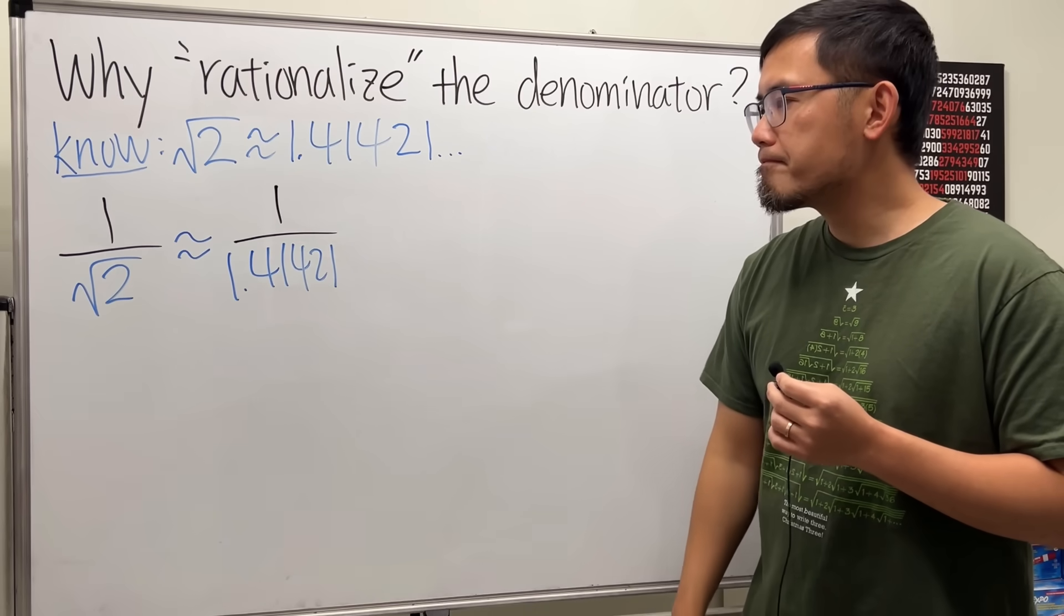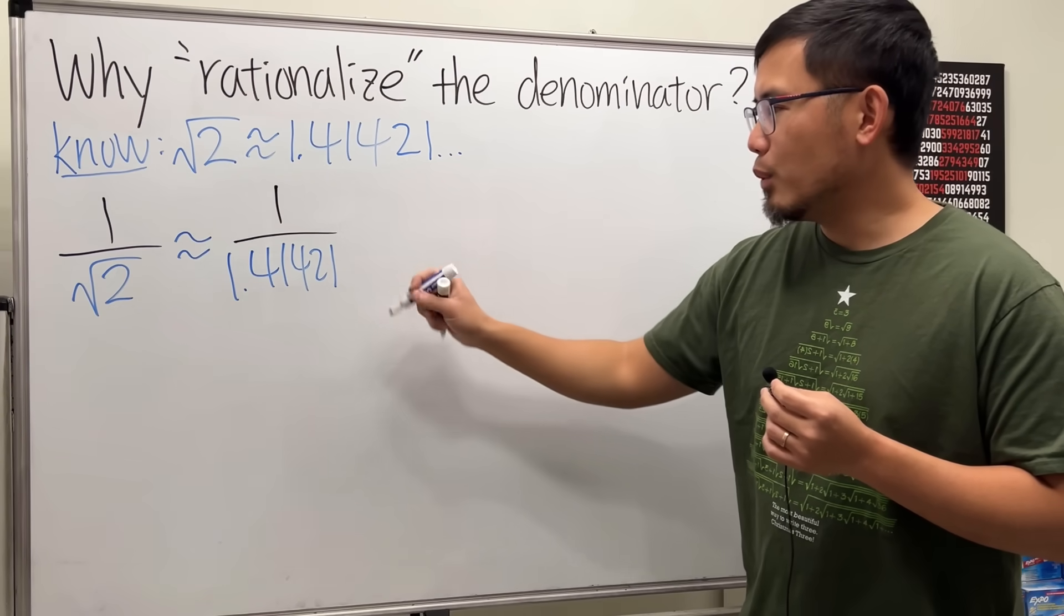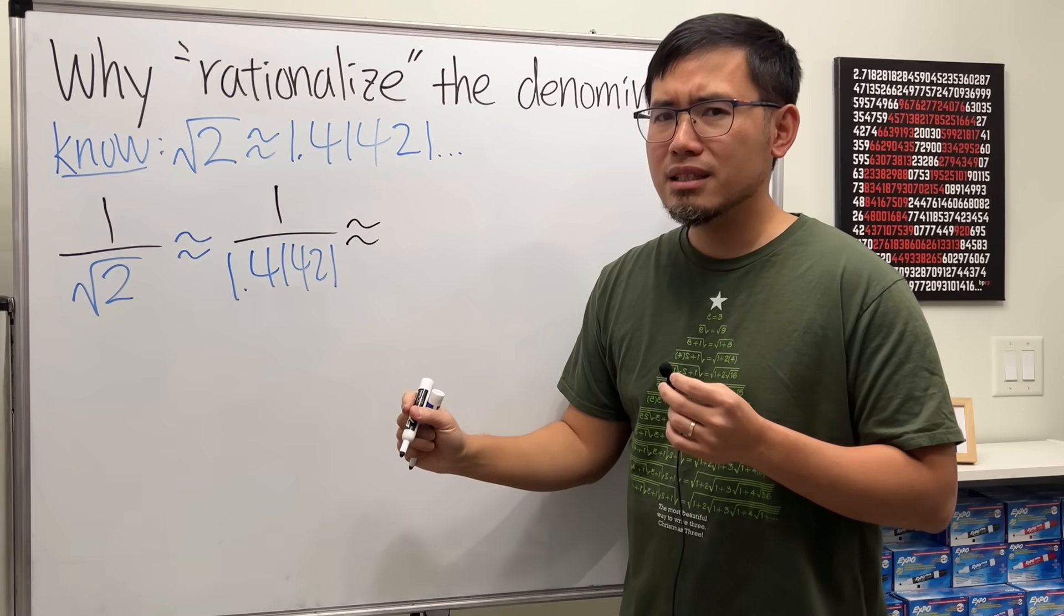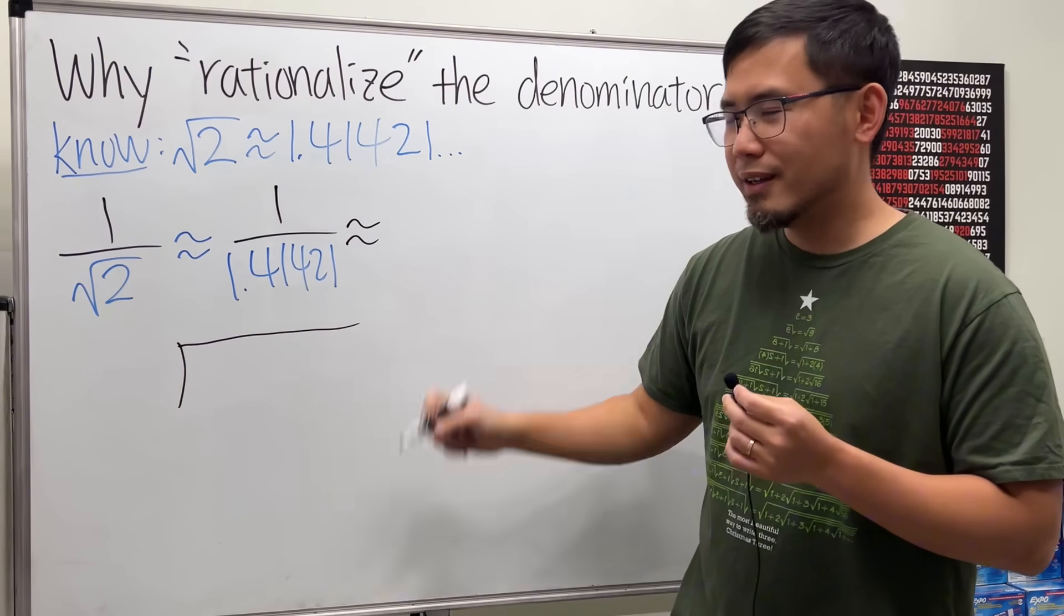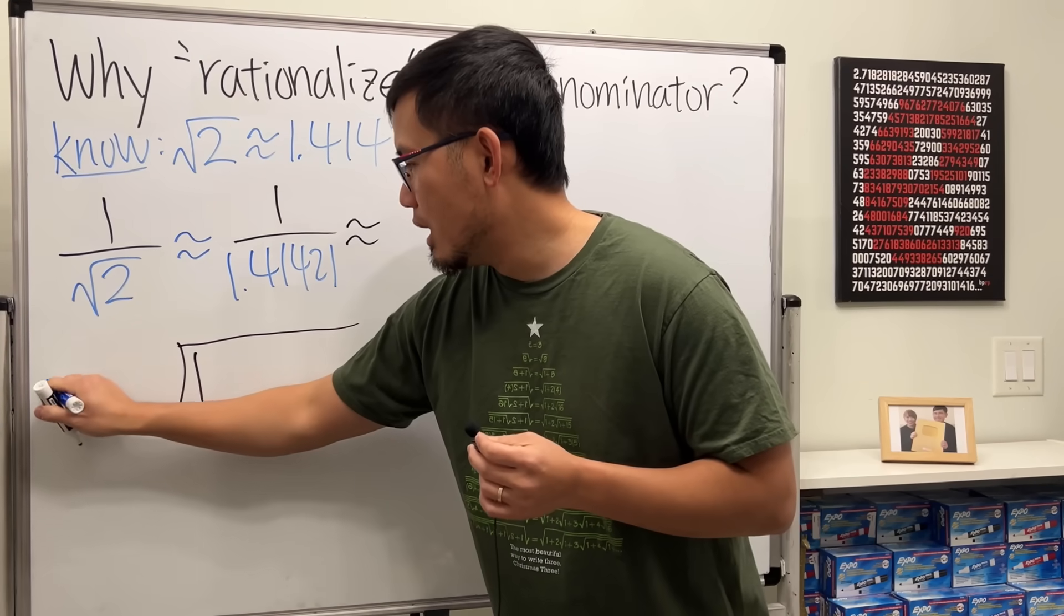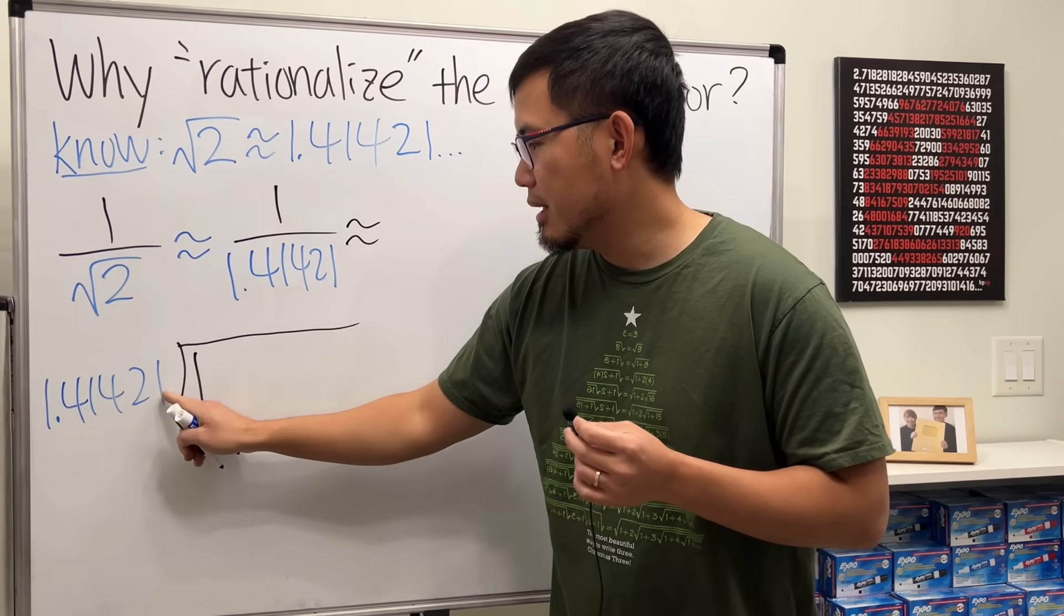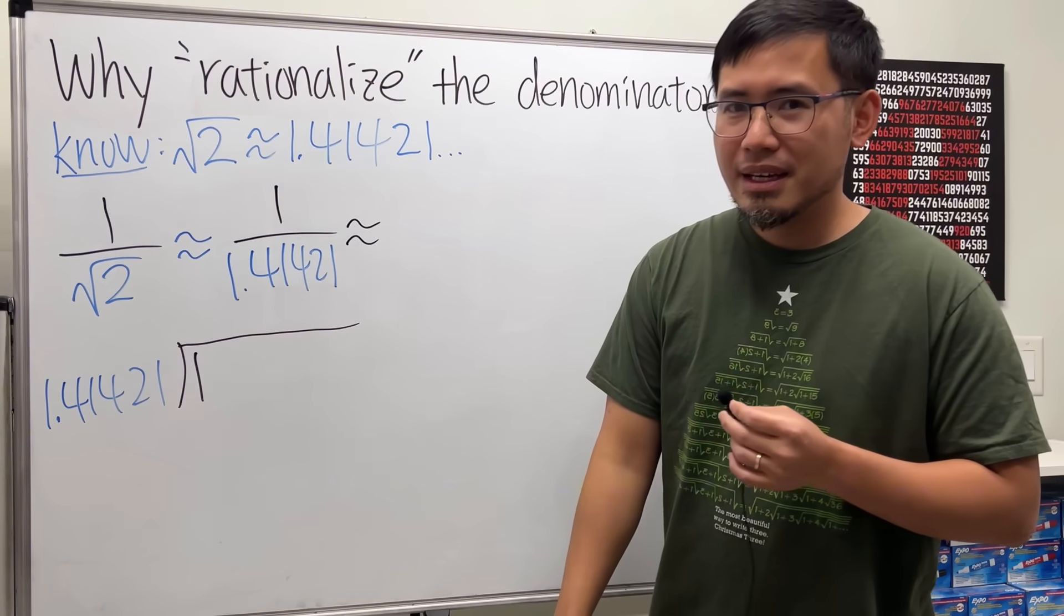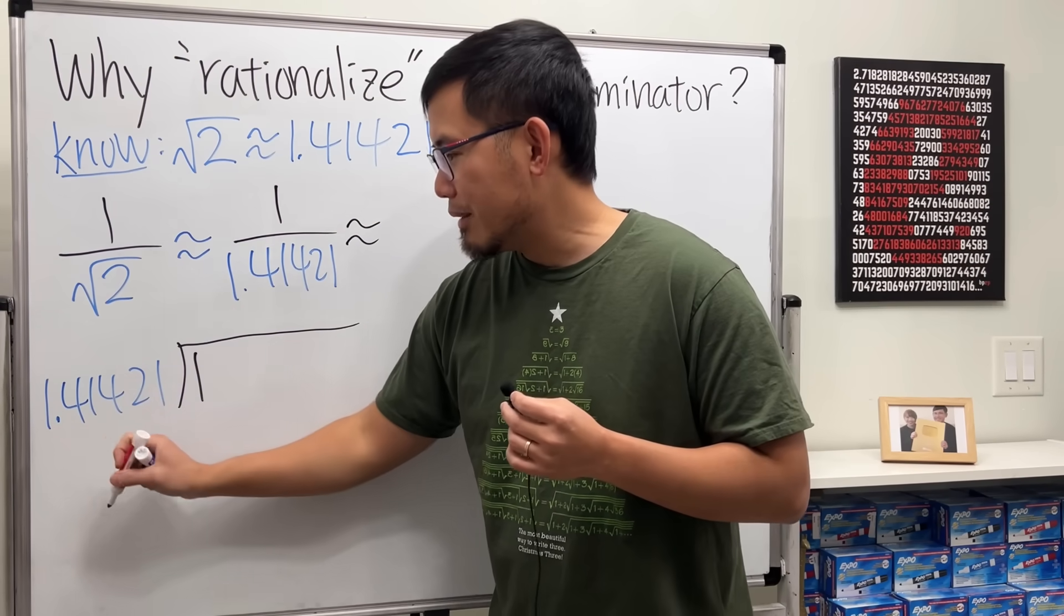Keep in mind we still have a lot more digits to go—infinitely many. So what do we do next? If I want to figure how big this is, we have to do 1 divided by that. Let's run through long division. Put the top number inside and the bottom number on the outside: 1.41421 and so on.